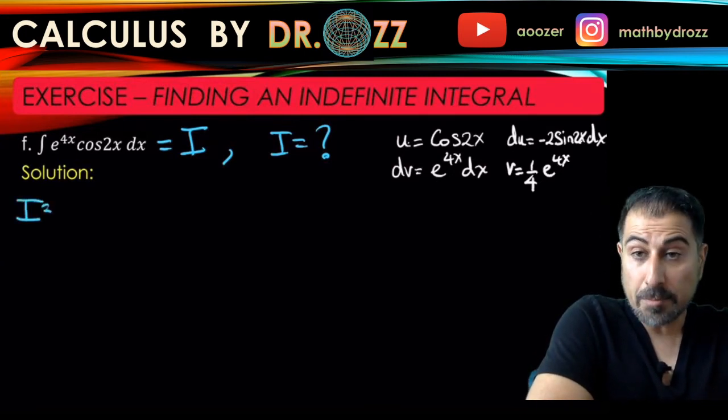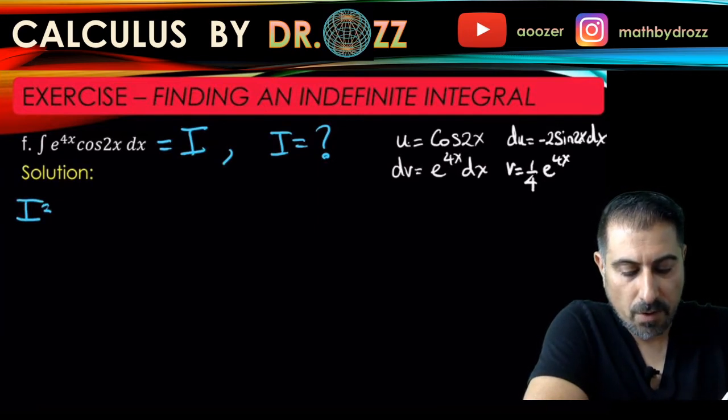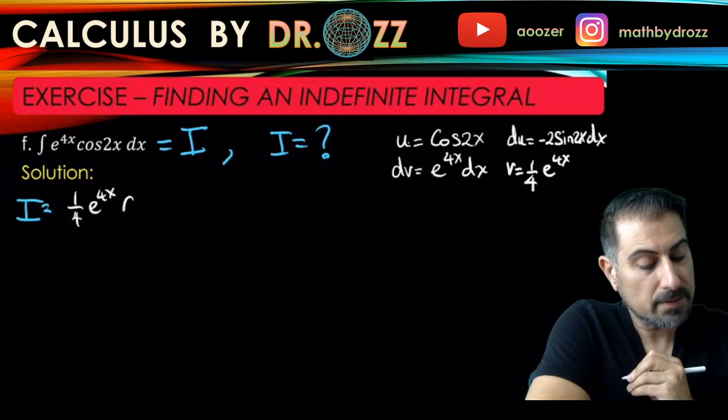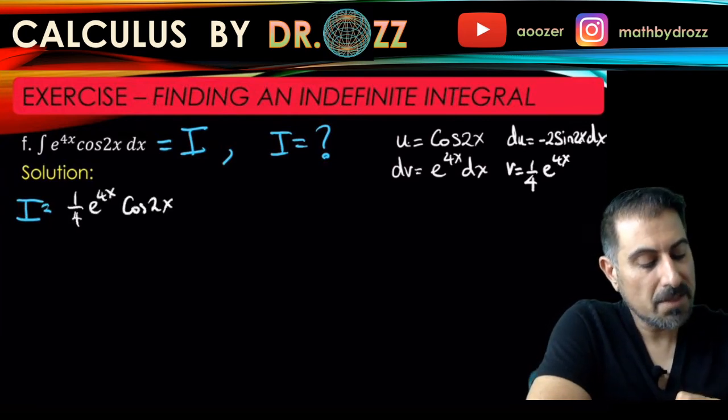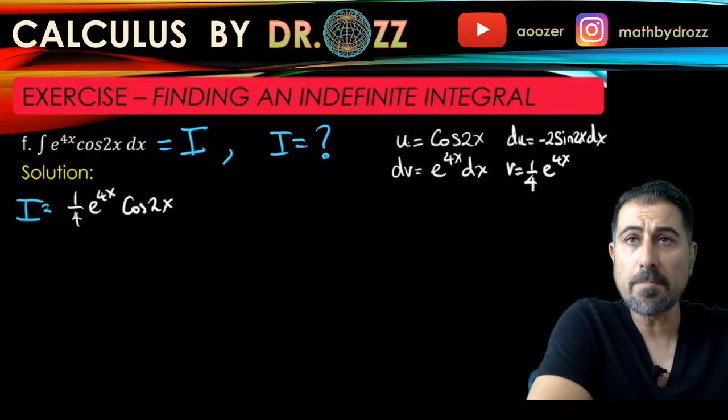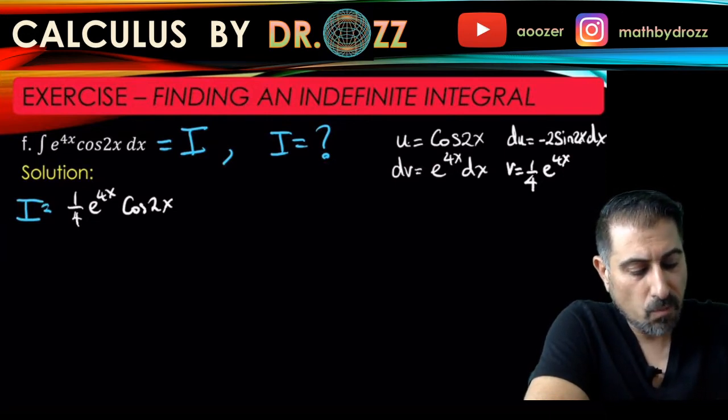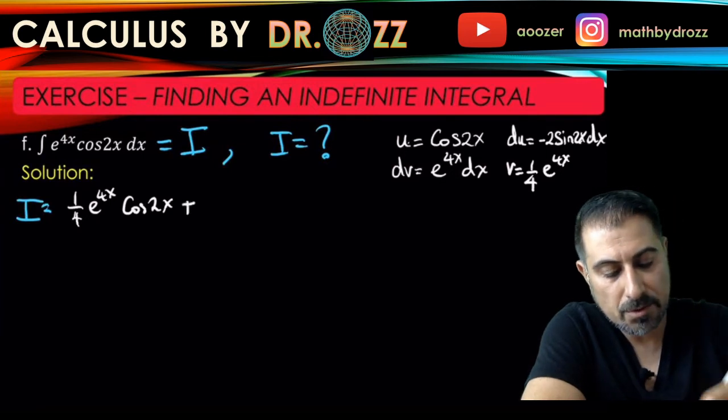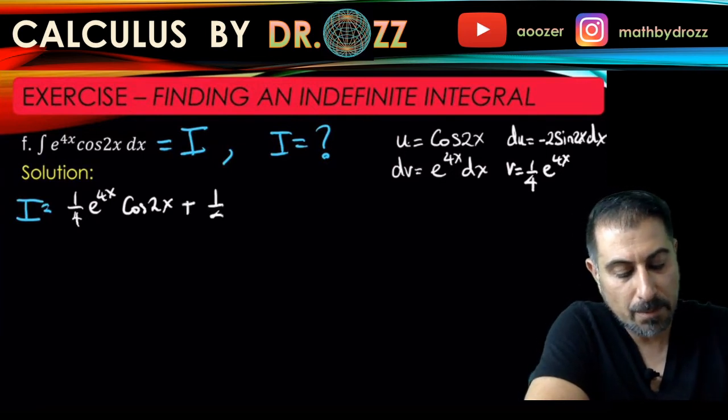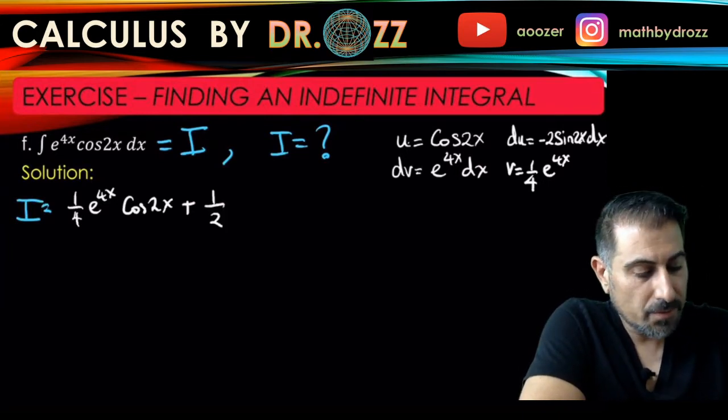The integral I is equal to the integration by parts: u times v minus the integral of v du. Here we go - one-fourth e to the 4x cosine 2x, that's u times v, minus v - but in the description of du you have a minus sign there. Minus v du is going to take you to plus one-fourth times two, so that's one-half.